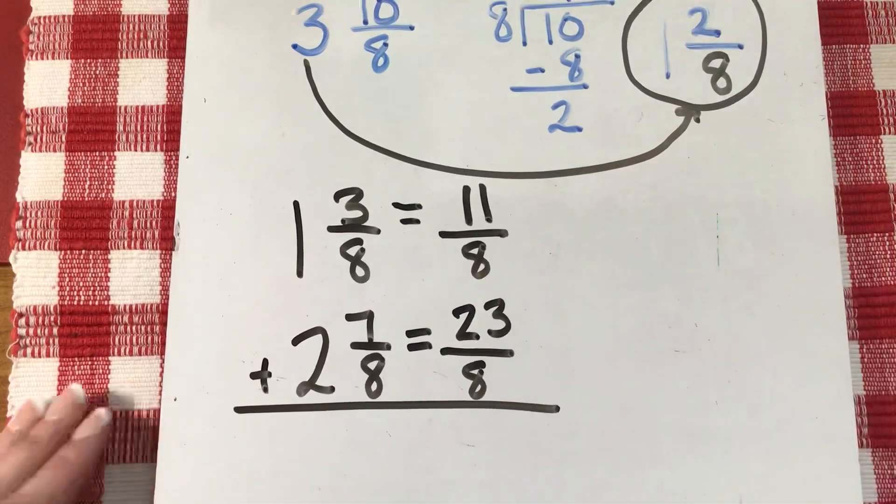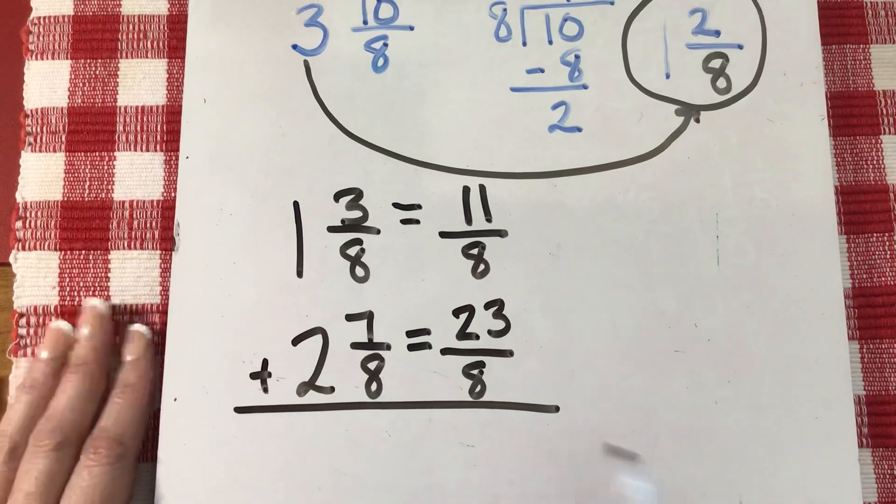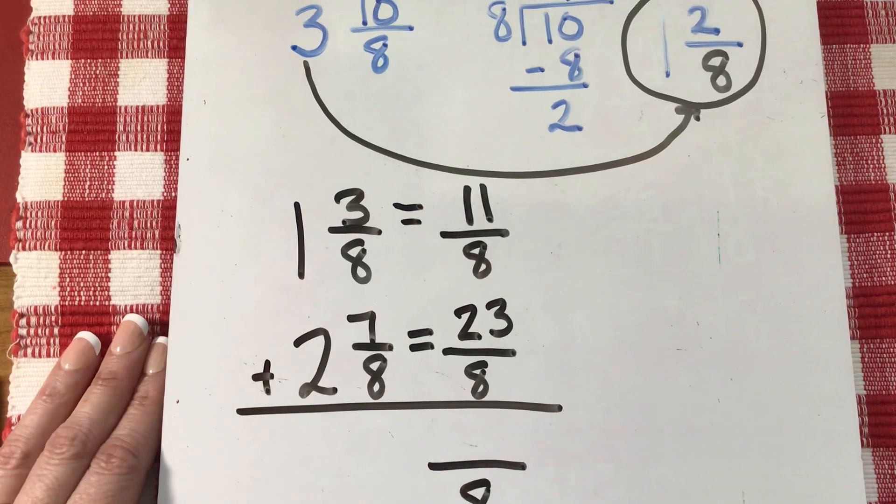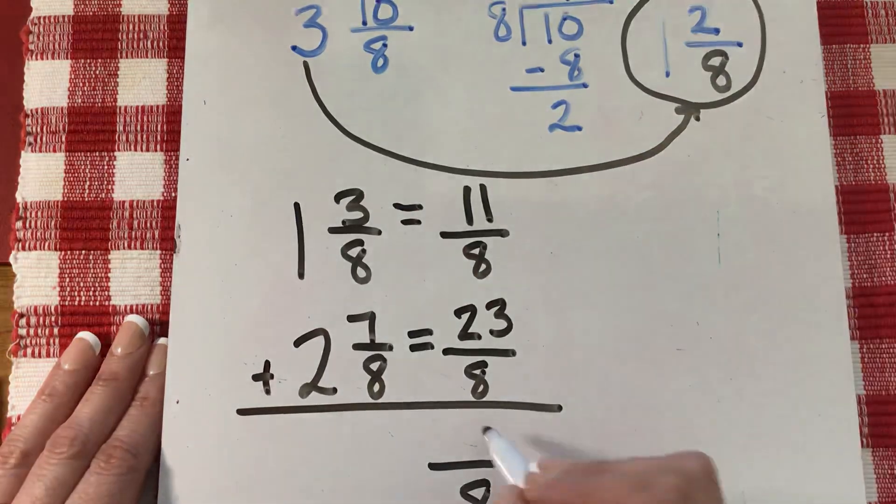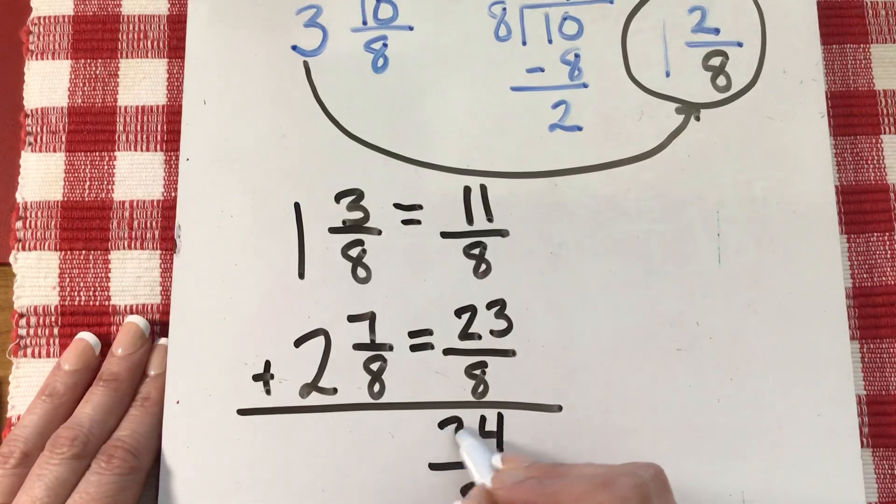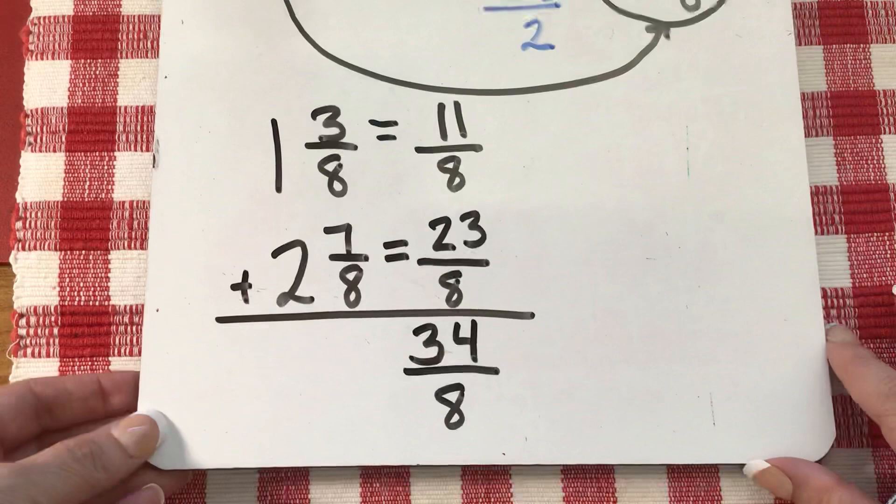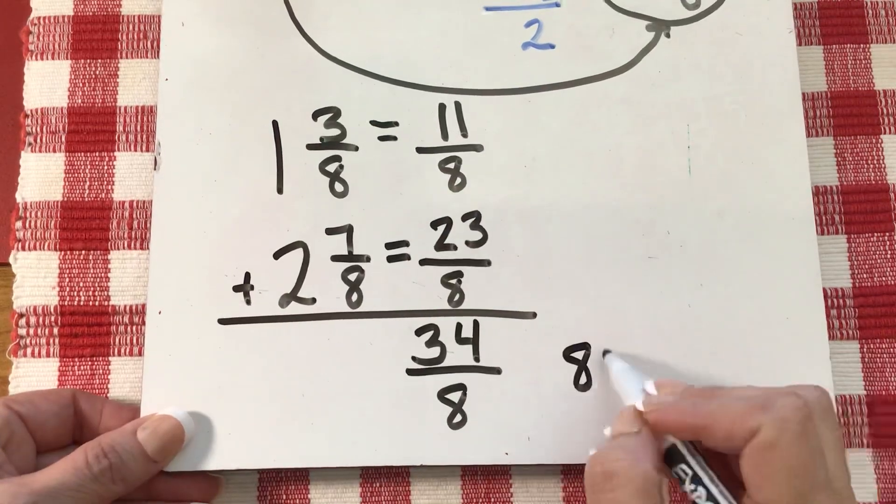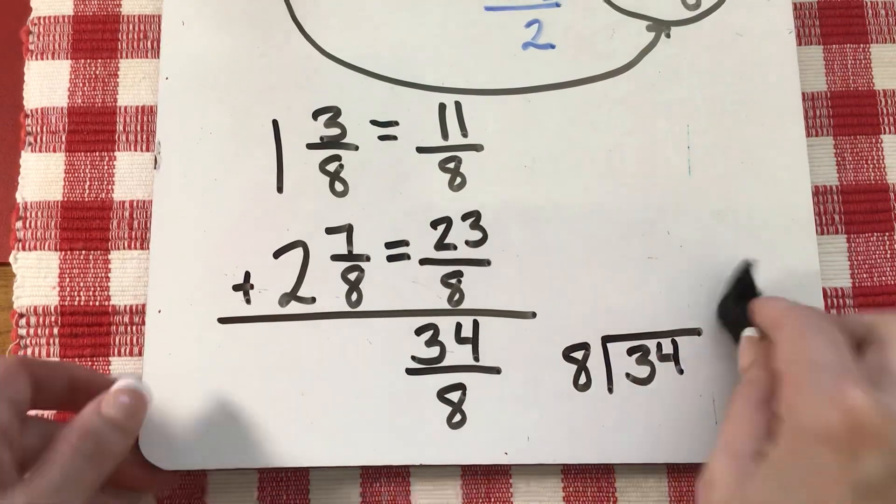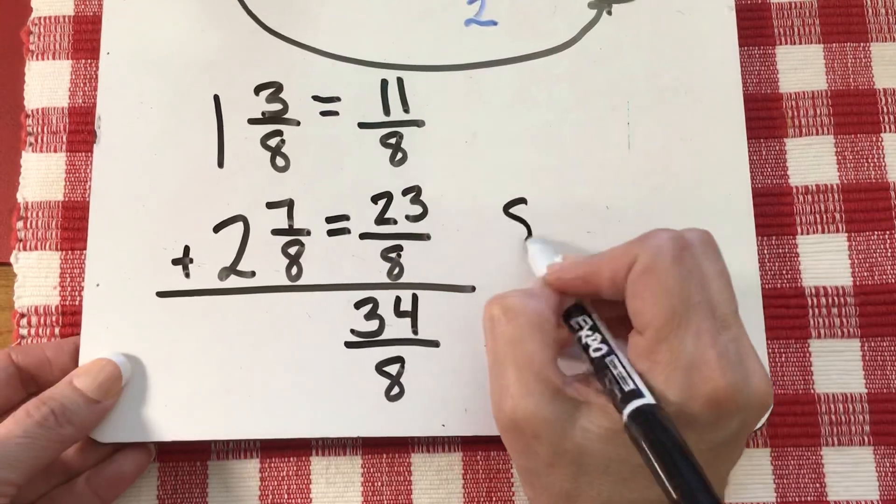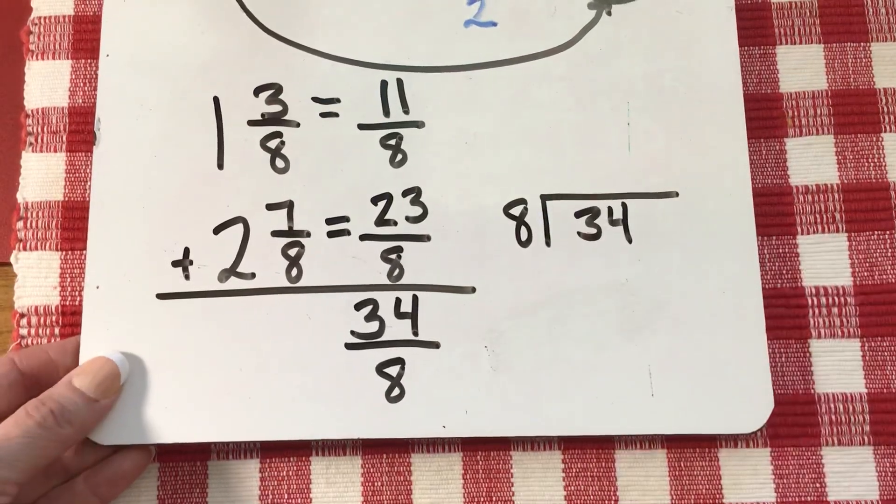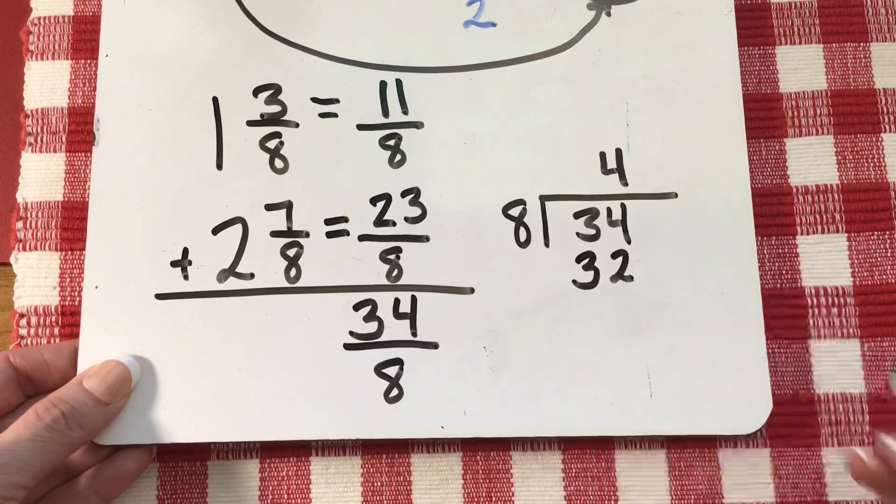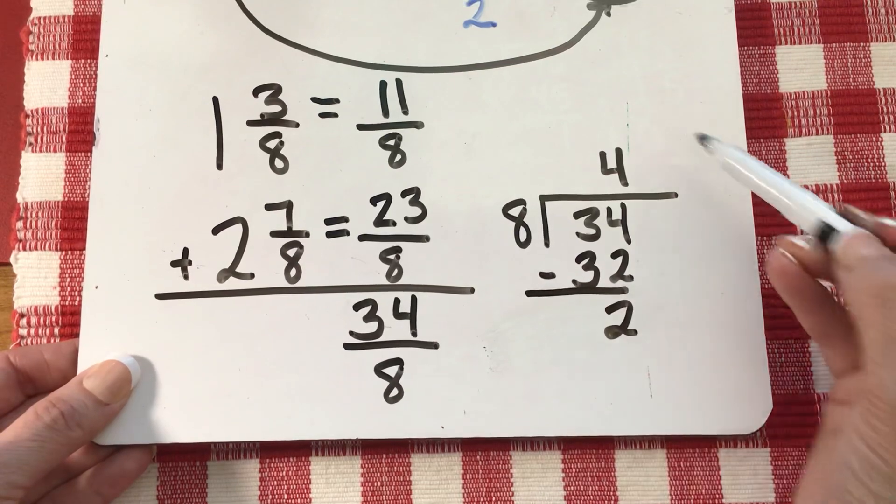I have both improper fractions. I'm going to add just my numerators. My denominator stays the same. Eleven plus twenty-three is thirty-four. One plus three is four, one plus two is three. Improper fraction, I cannot leave it like that. Take your denominator, divide it into your numerator. Eight divided into thirty-four. Eight times what gets me close to thirty-four? Eight times four. Thirty-two. Subtract. Two.